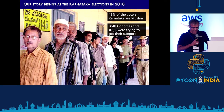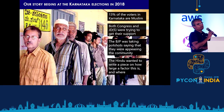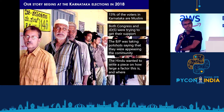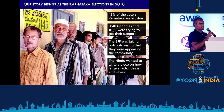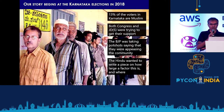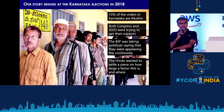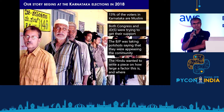Let's dive in. The story begins at the Karnataka elections in 2018. About an eighth of the voters are Muslim. Both Congress and the Janata Dal JDS were trying to get their support, while BJP was taking pot shots saying both of them are just trying to appease the community. The Hindu newspaper wanted to write a piece about how large a factor this is and where the Muslim vote is strong.